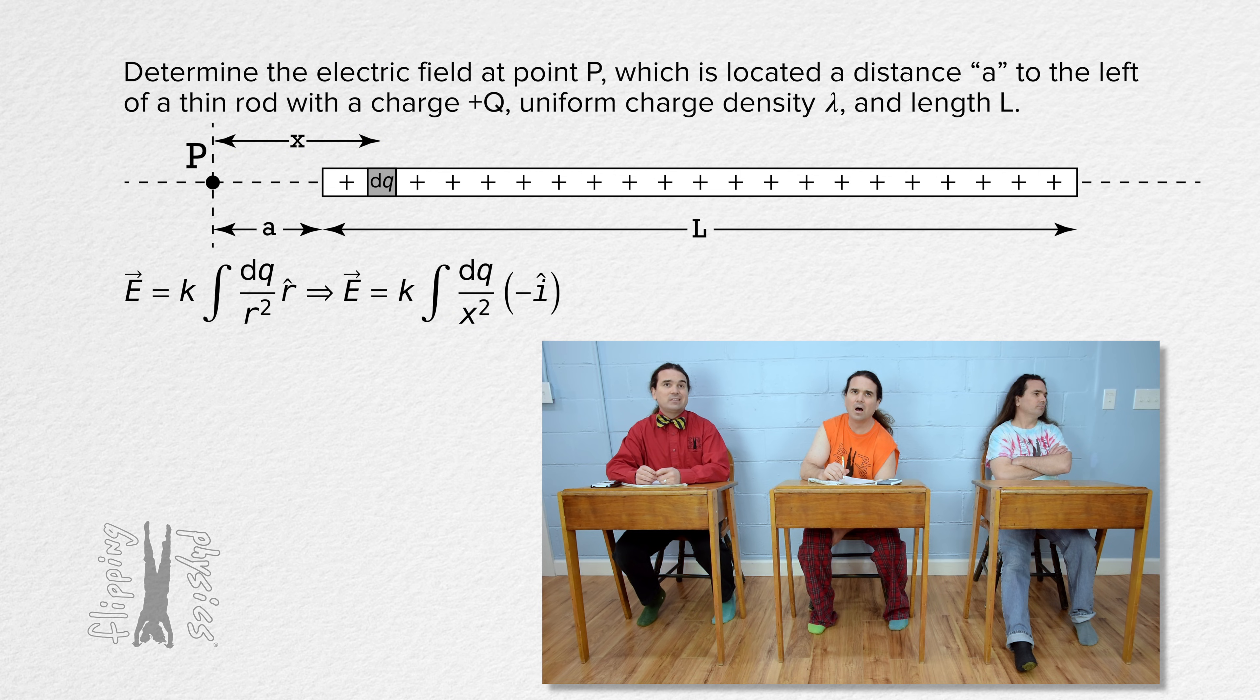We cannot really take the integral of the linear variable x with respect to charge, so we need to use linear charge density to go from dq to dx in the integral. We know linear charge density equals the total charge on the rod, capital Q, divided by the total length of the rod, capital L.